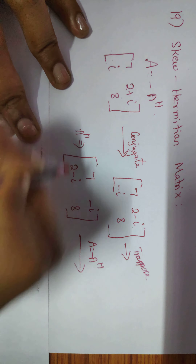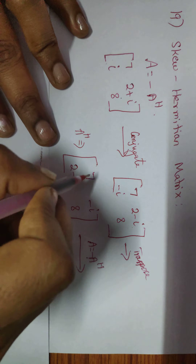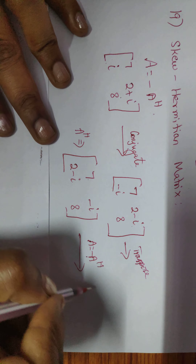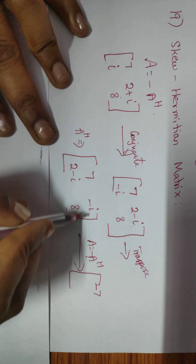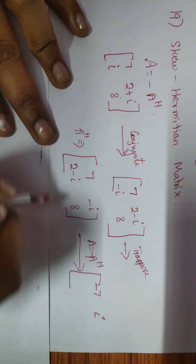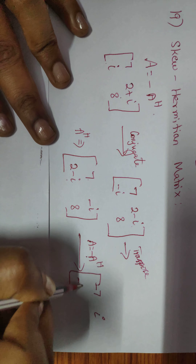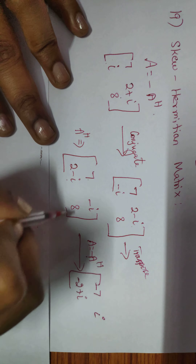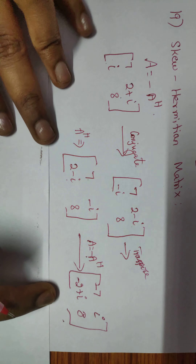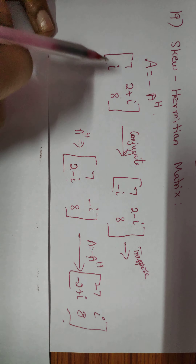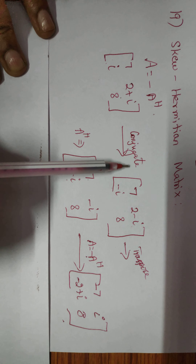Applying the negative sign to the A^H matrix: minus of 7 gives -7; minus of -i gives +i; minus of (2-i) gives (-2+i); and minus of 8 gives -8. This resulting matrix is the skew-Hermitian matrix.